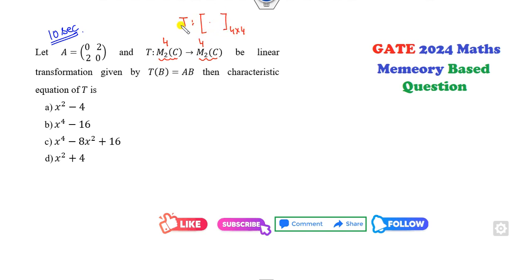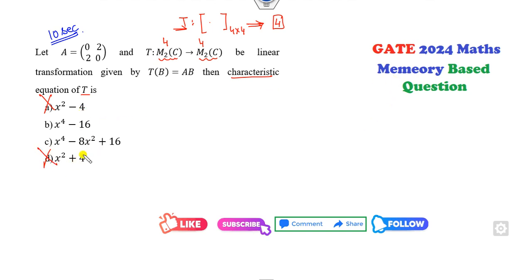Once this matrix is 4×4, what is the characteristic order? It is 4th order. So that means certain options are cancelled. Remember, this is a memory-based question. It may be that the options are changed, but the degree-2 options will be cancelled.